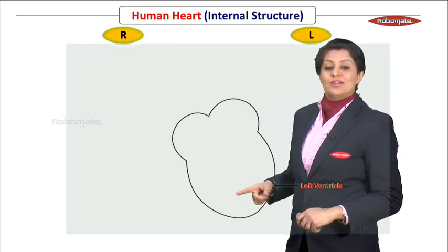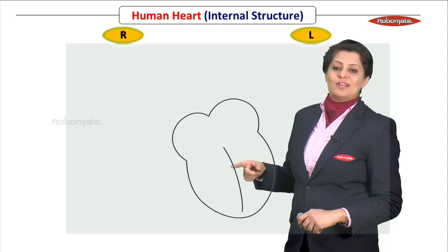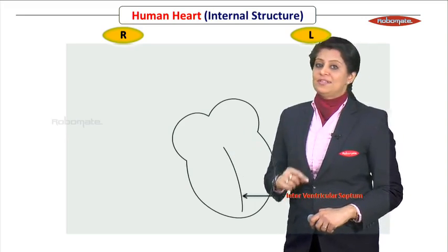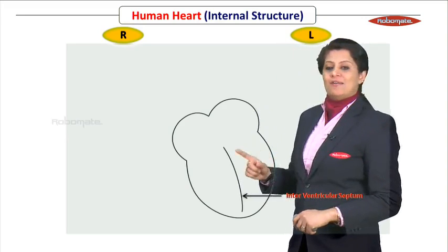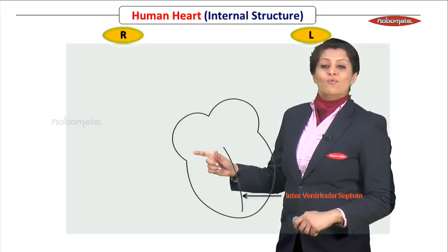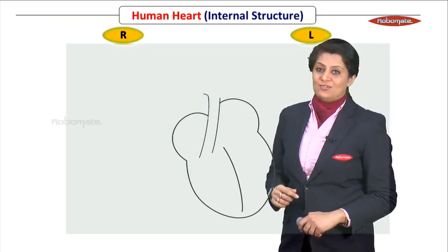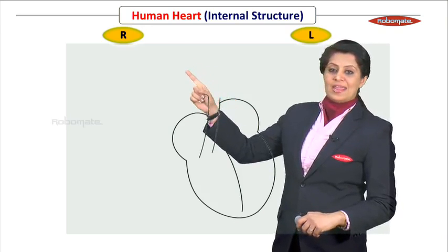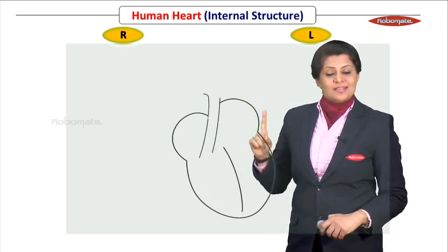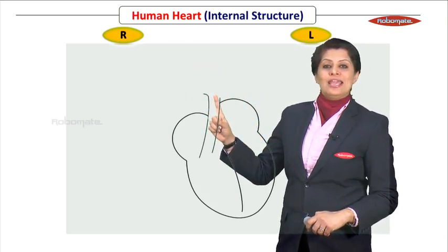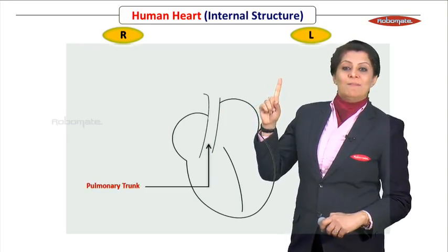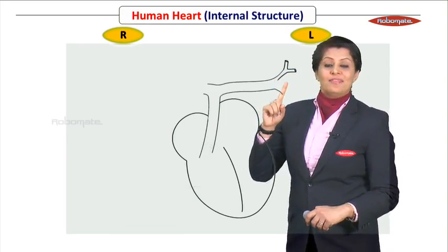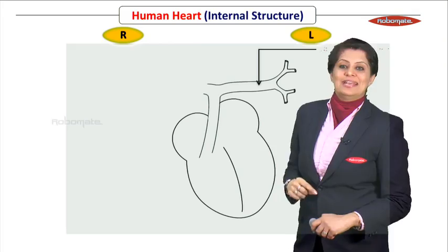Now further, draw the septum in between the ventricles — this is the interventricular septum. After this, draw a beautiful blood vessel arising from the right ventricle, which is the pulmonary trunk. This trunk divides into right and left branches. At this stage, draw only the left side of the pulmonary trunk, branching beautifully — this is the left pulmonary artery.